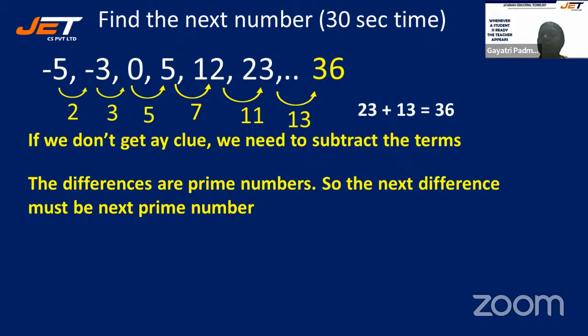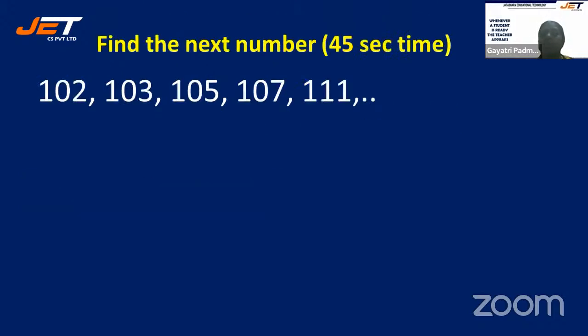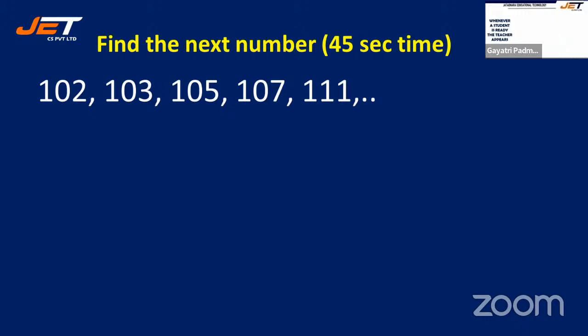Now this sum can be done by you all. We have 102, 103, 105, 107, 111. Each term can be written as 100 plus a prime number: 100+2, 100+3, 100+5, 100+7, 100+11.